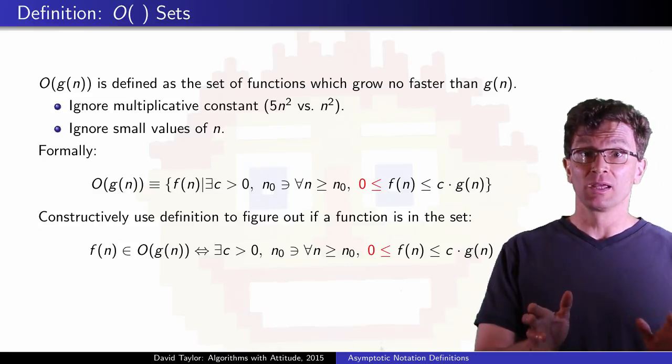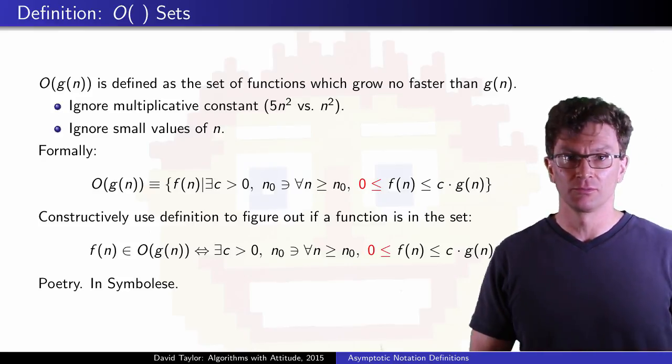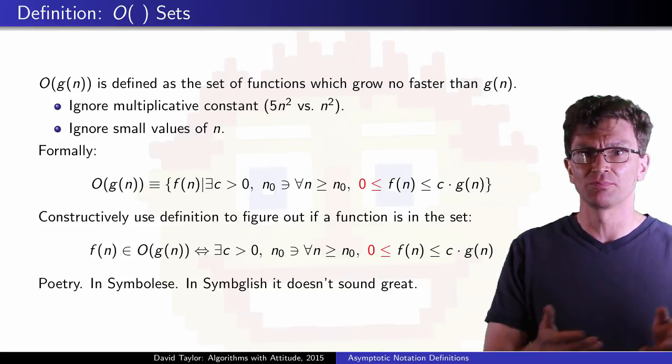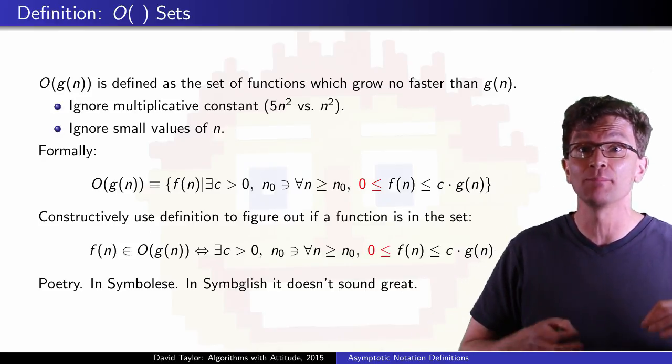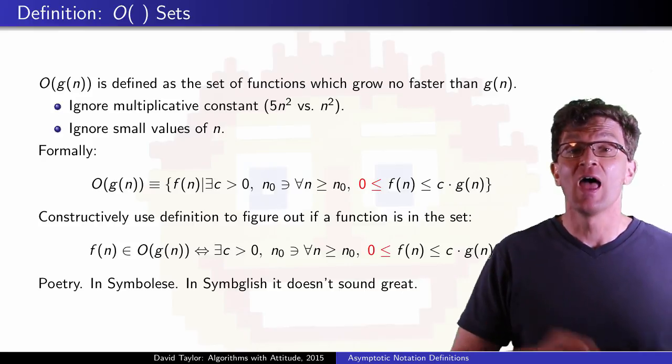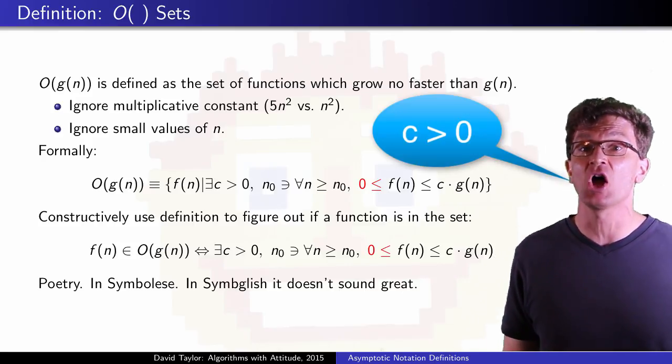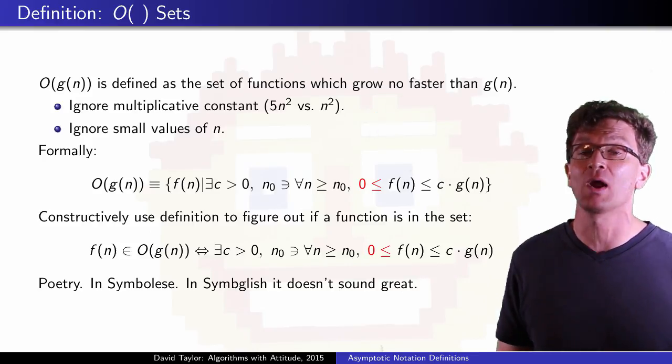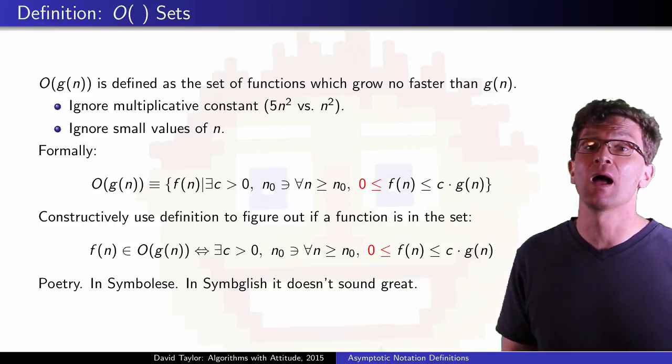I know what you're thinking about these definitions. Poetry. If you speak fluent symbolese. In symbolish, it's less great. I know it's boring, but I'm going to read it in case some don't know what these symbols mean. f(n) is in big O of g(n), if and only if there exists c and n₀ such that for all n greater than or equal to n₀, f(n) ≤ c·g(n).